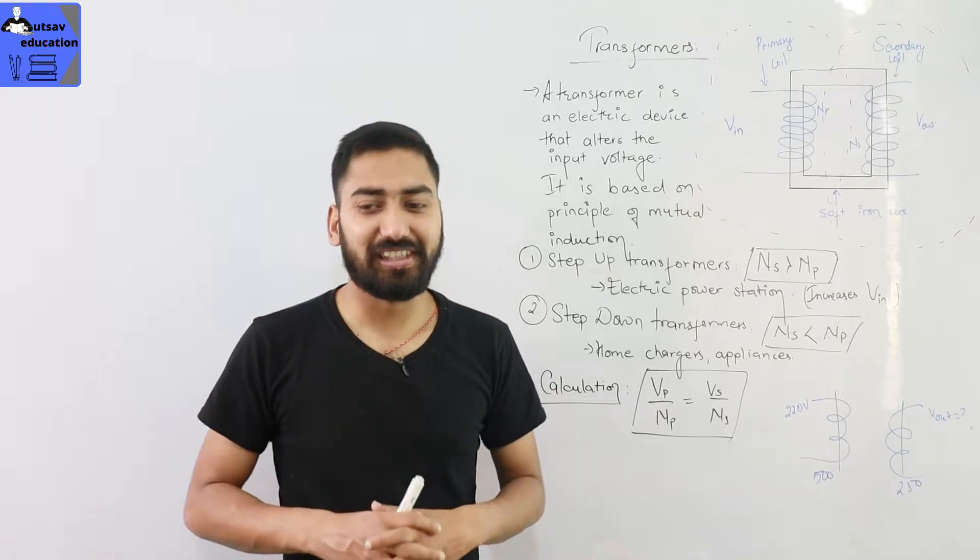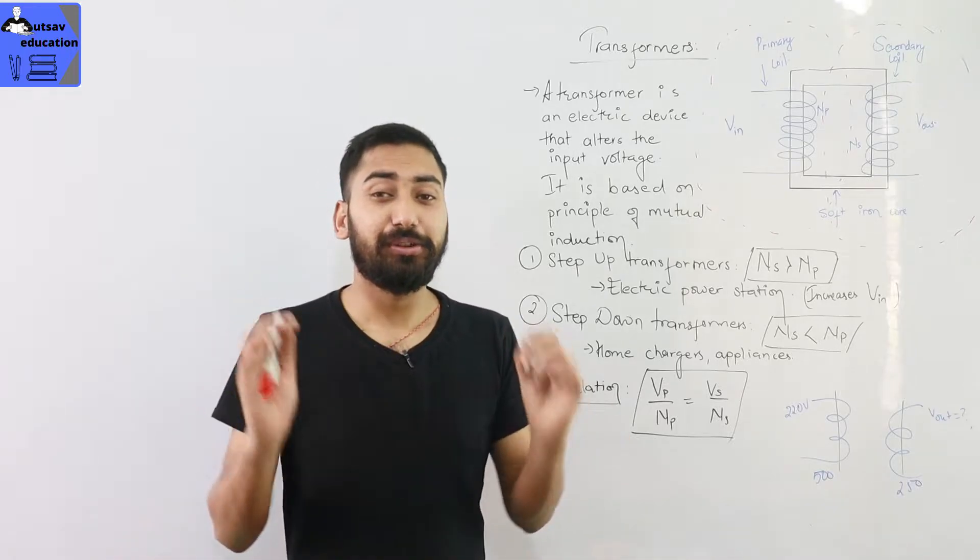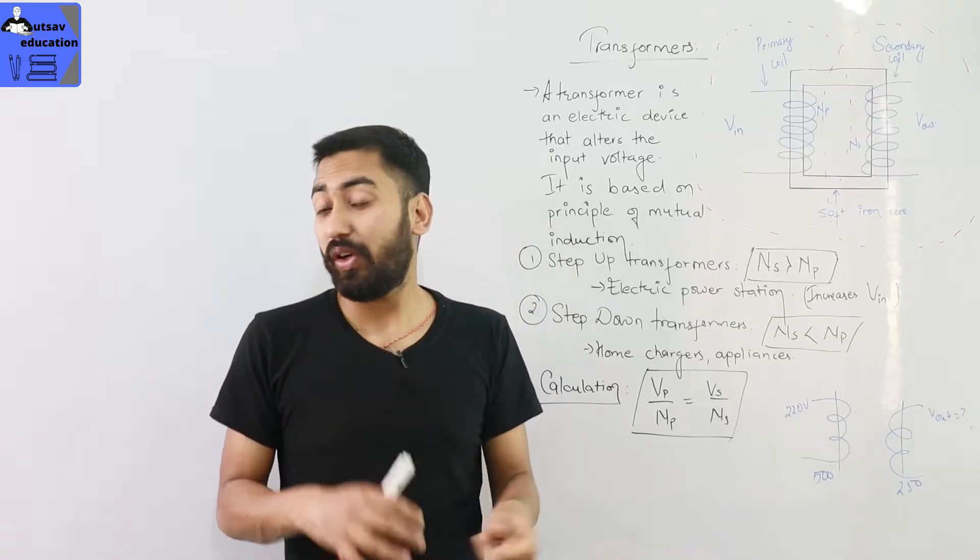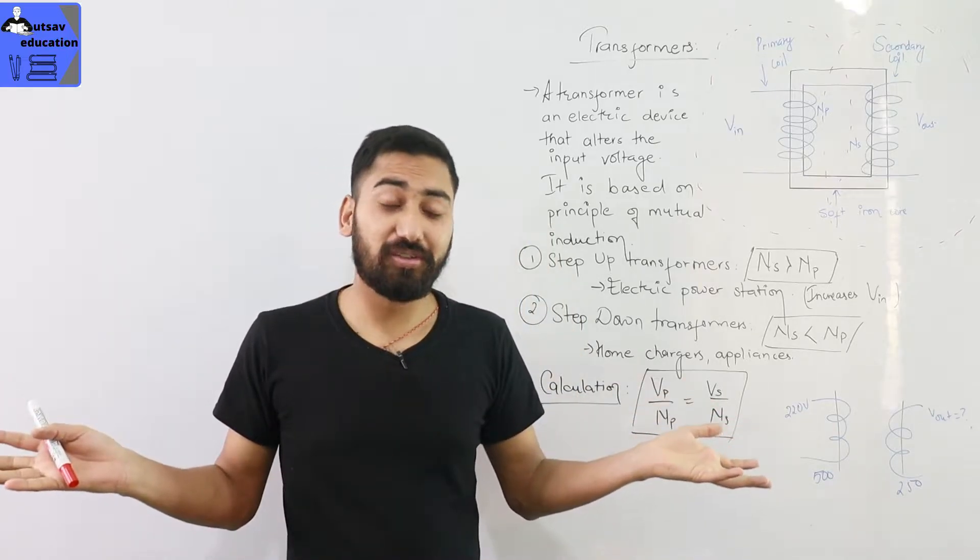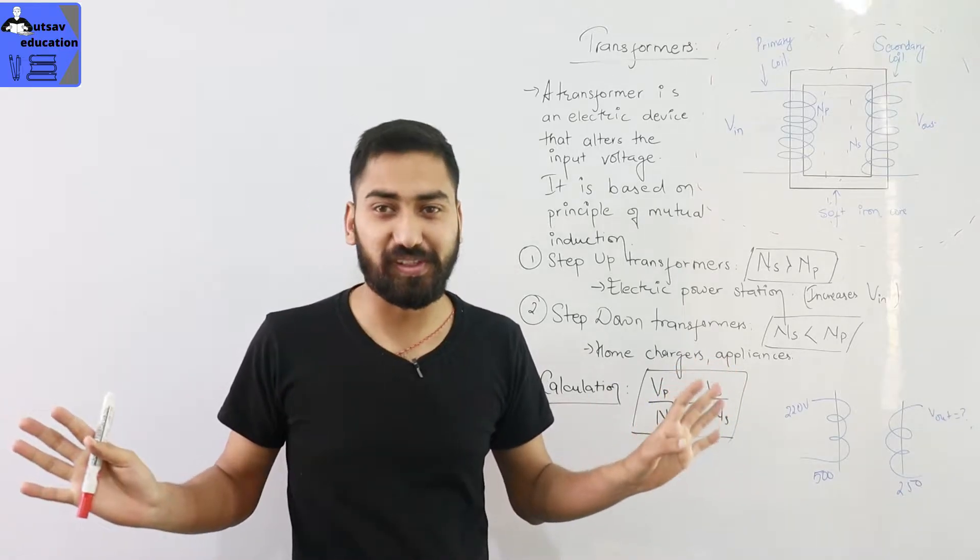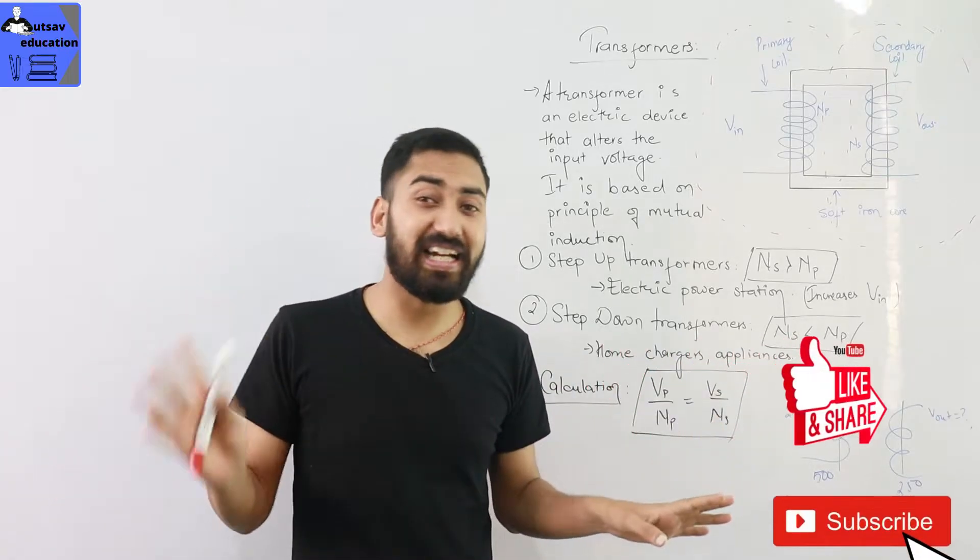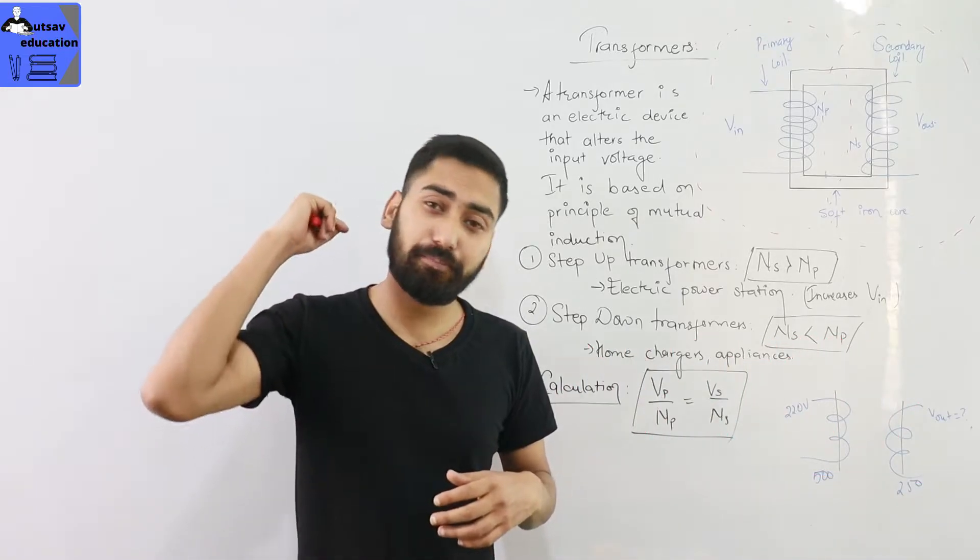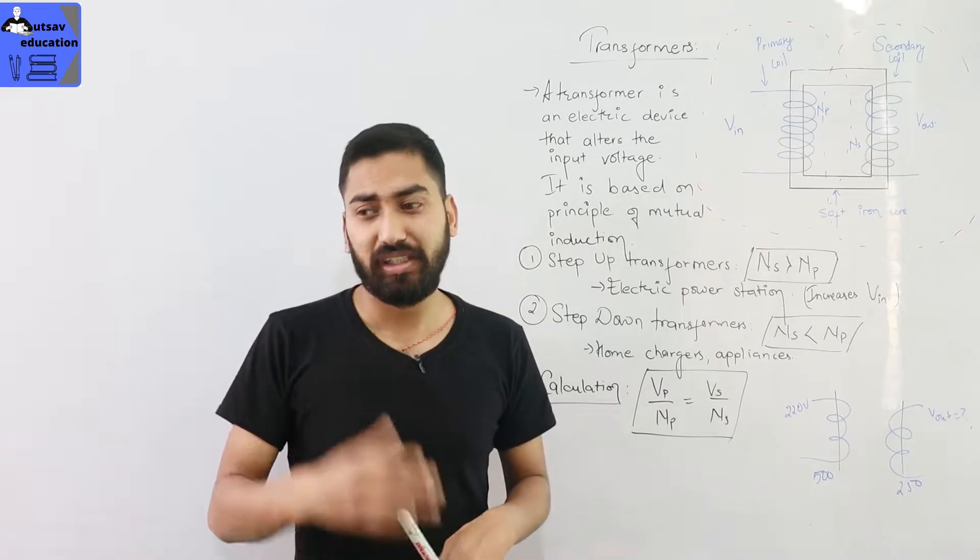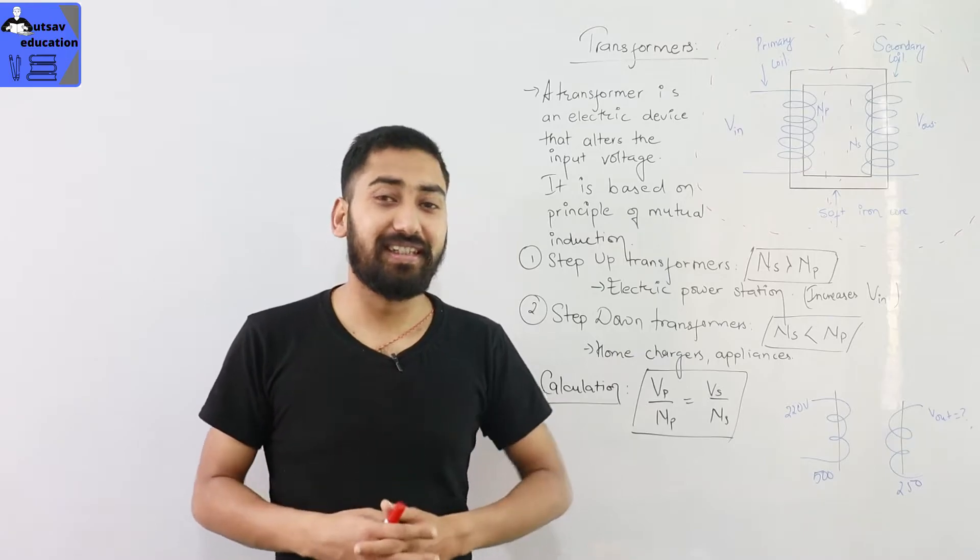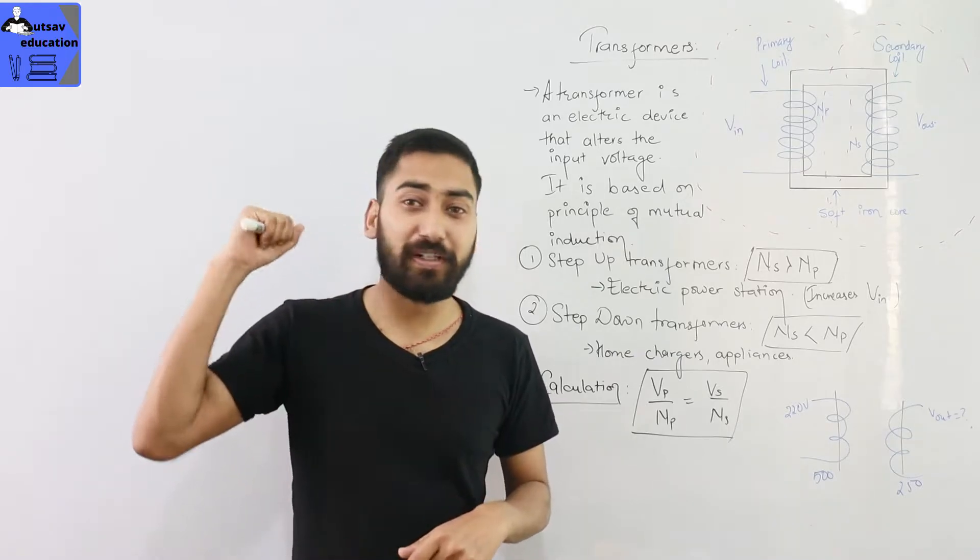This is a class 10. Usually in class 10, there is a transformer or electric power. This is not a numerical answer. It is not 100%. Like light or human eye defects of vision, it is not 100%. This is not a 100% question.